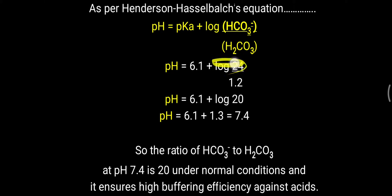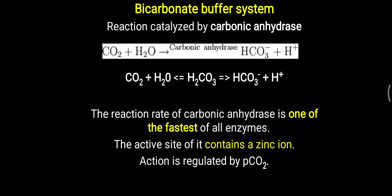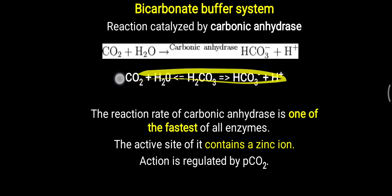If more acid is added, the bicarbonate ion will be utilized, going from 24 down to 23 or 22, but simultaneously the body will try to conserve more bicarbonate along with elimination of more acid. Ultimately, the ratio of 20 is maintained, helping to maintain the pH of our blood. The most important enzyme in this bicarbonate buffer system is carbonic anhydrase, which catalyzes the reversible reaction: CO₂ + H₂O ⇌ H₂CO₃ ⇌ HCO₃⁻ + H⁺.